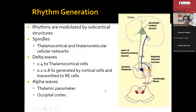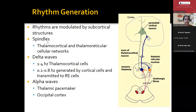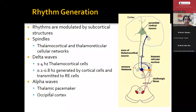How is the EEG rhythm generated? Once generated from pyramidal neurons, the EEG rhythm is modulated by subcortical structures — because of which we get either a spindle rhythm, delta wave, or alpha wave. Spindles are mainly from thalamocortical and thalamoreticular cellular networks, occurring especially during sleep. Delta waves are generated by cortical cells transmitted to the RE cells, and the alpha wave is generated by either the thalamic pacemaker or the occipital cortex.